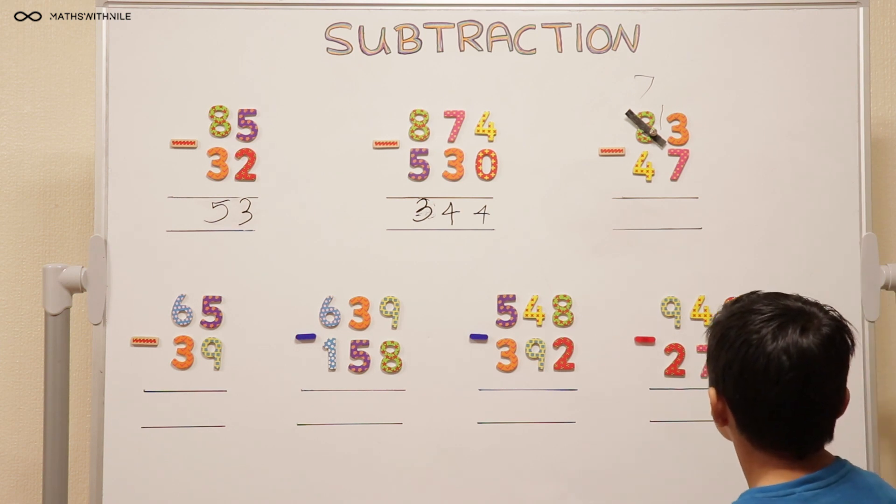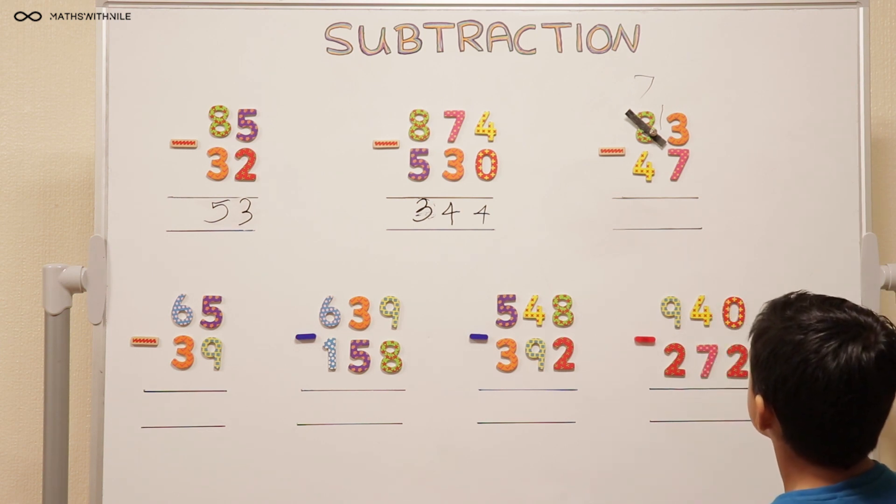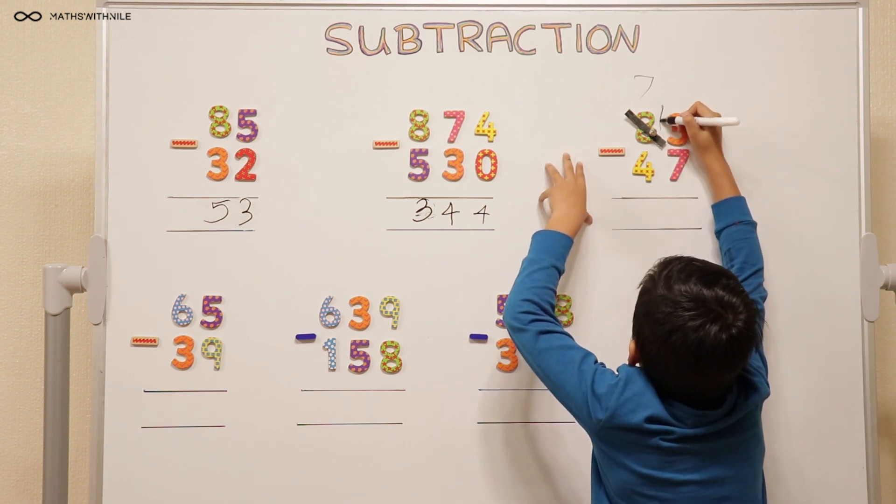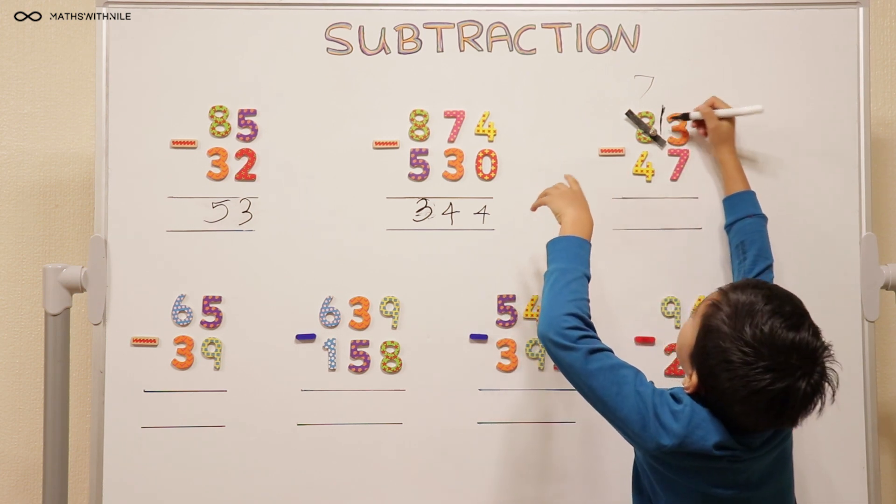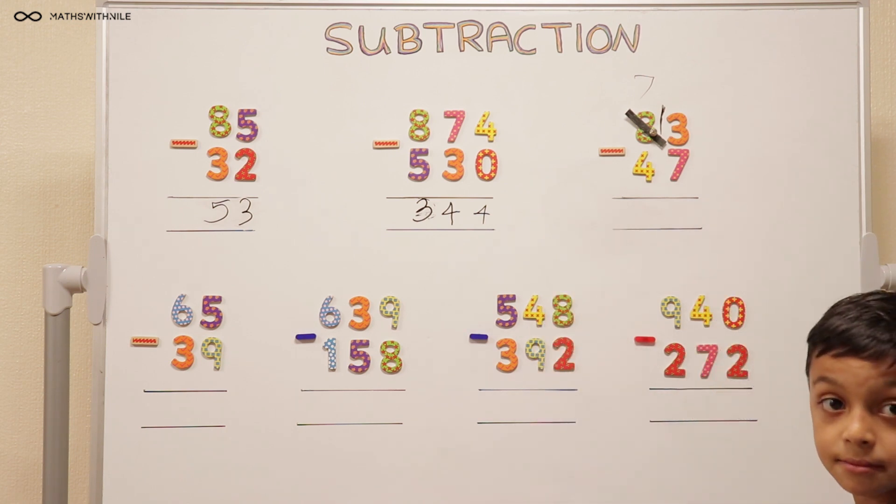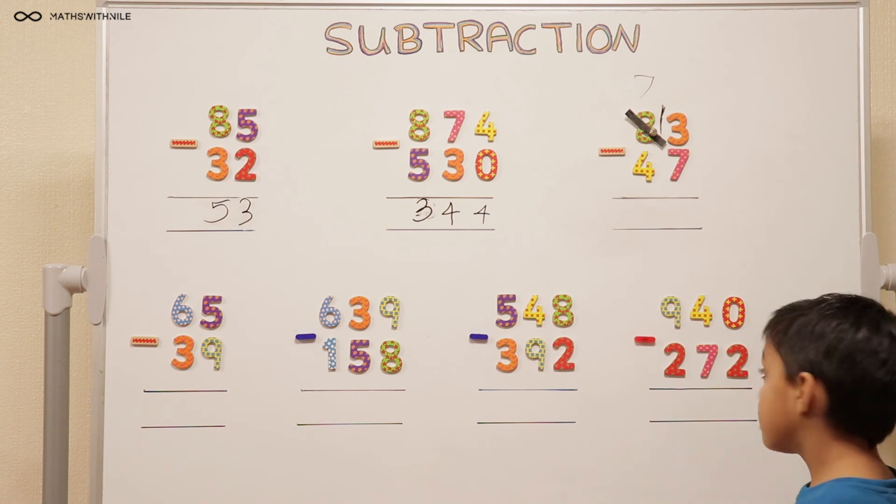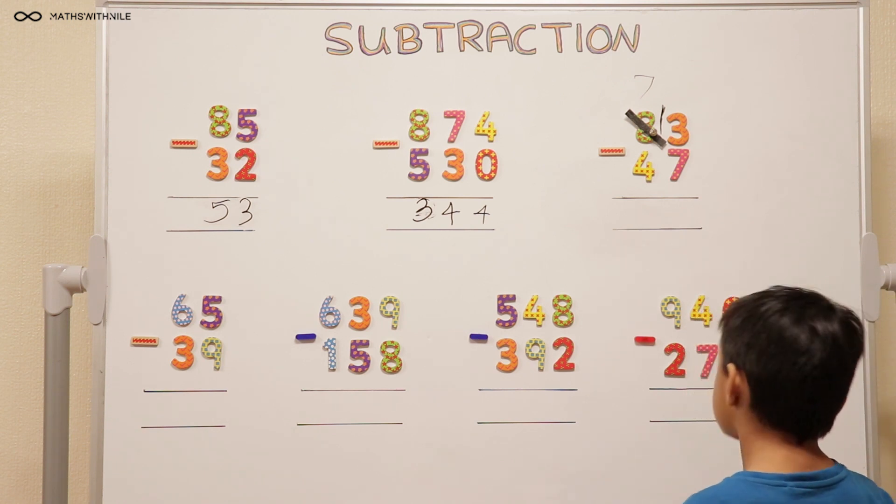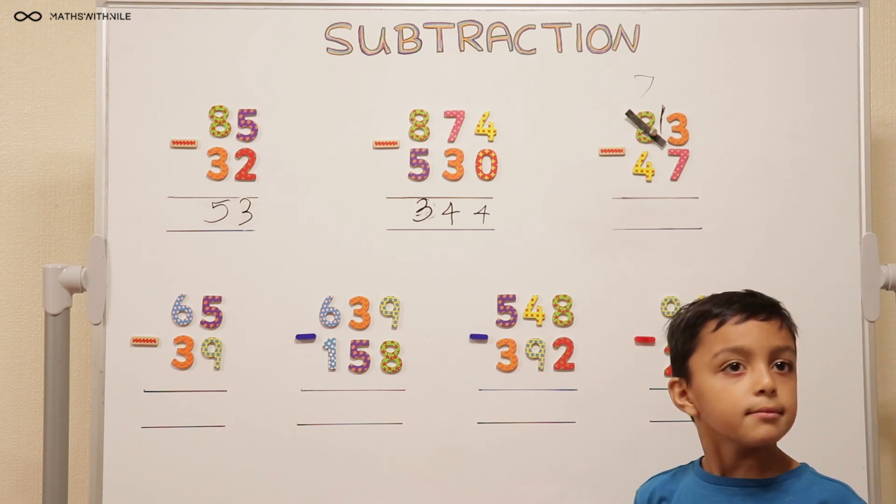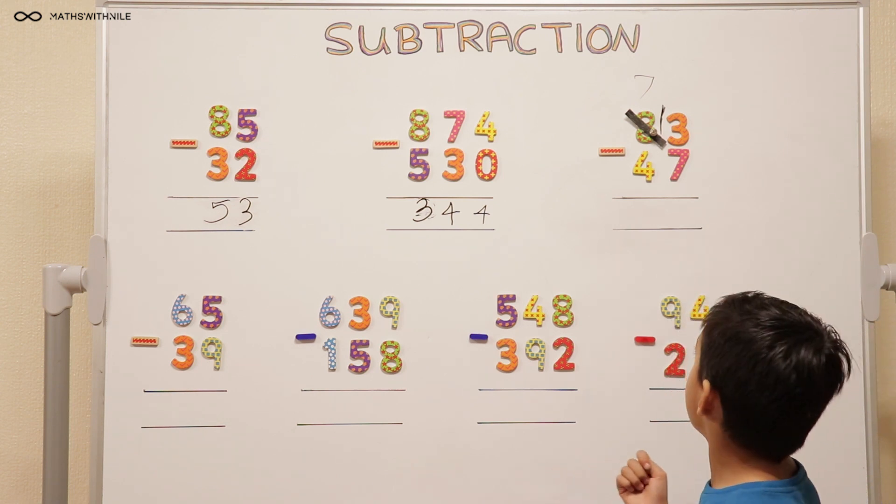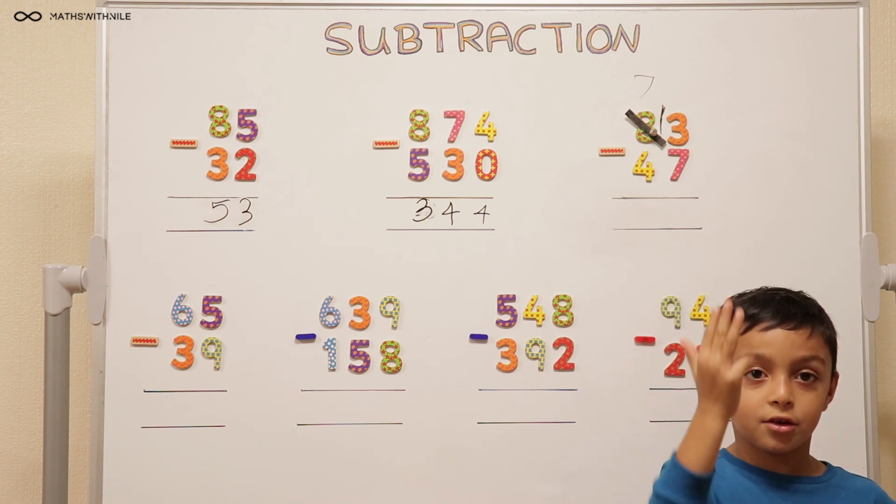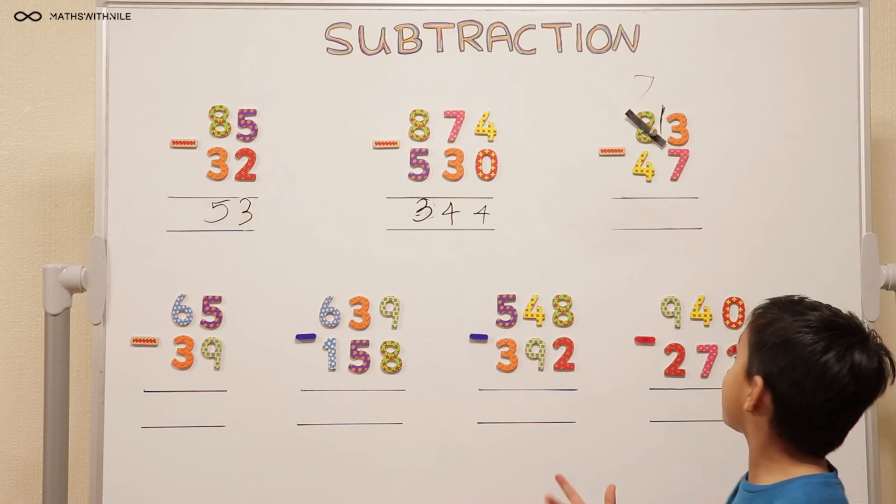Can you just trace over that 1 to make it darker? You've taken 1 from the 8 leaving 7 and you've put the 1 next to the 3, which makes 13. So 13 take away 7. 7, 8, 9, 10, 11, 12, 13. So 6. Very good.